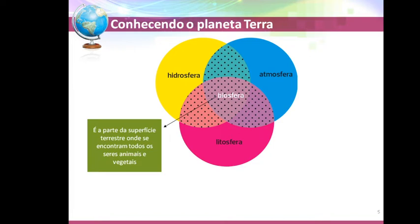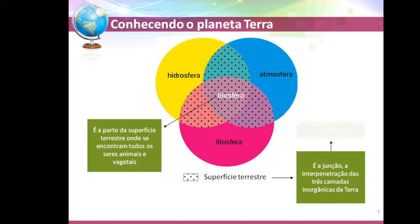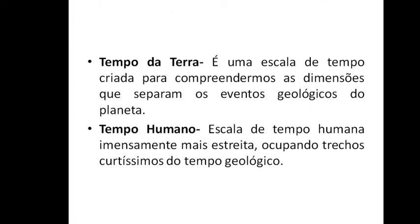Isso pode ser citado tanto na parte dos continentes quanto na parte dos oceanos. A superfície terrestre é a junção, a interpenetração das três camadas inorgânicas da Terra — incluindo a biosfera. Na página 7 da apostila, vocês vão encontrar sobre a evolução do sistema da Terra: a litosfera, a atmosfera e a hidrosfera. A junção desses três elementos forma a biosfera.